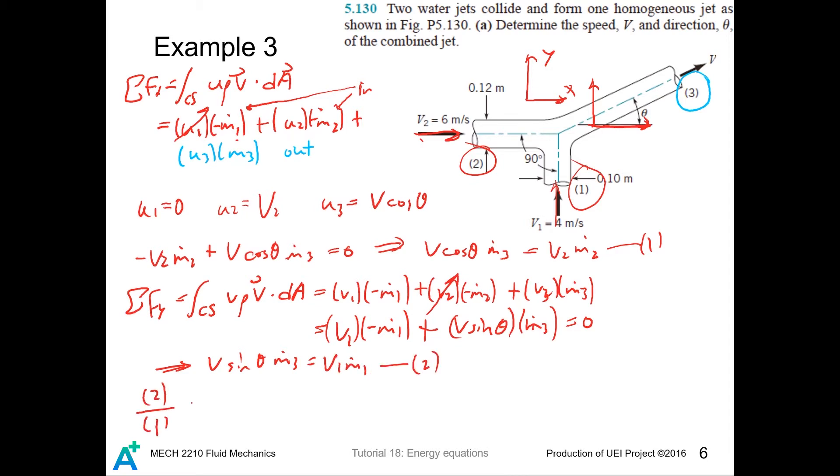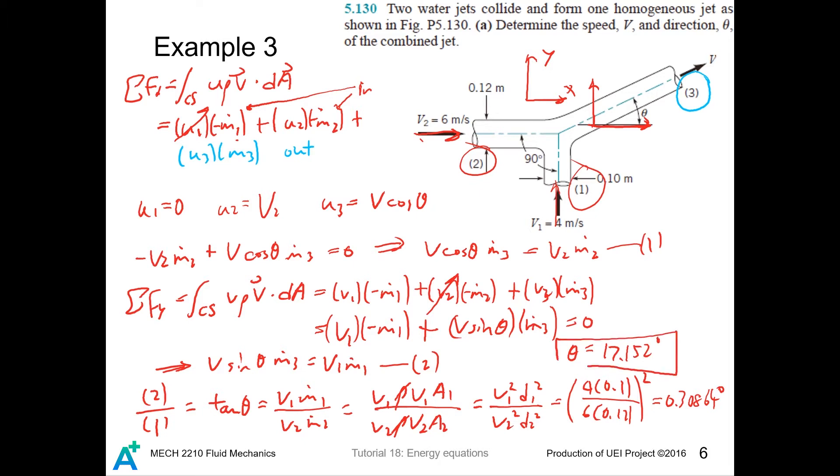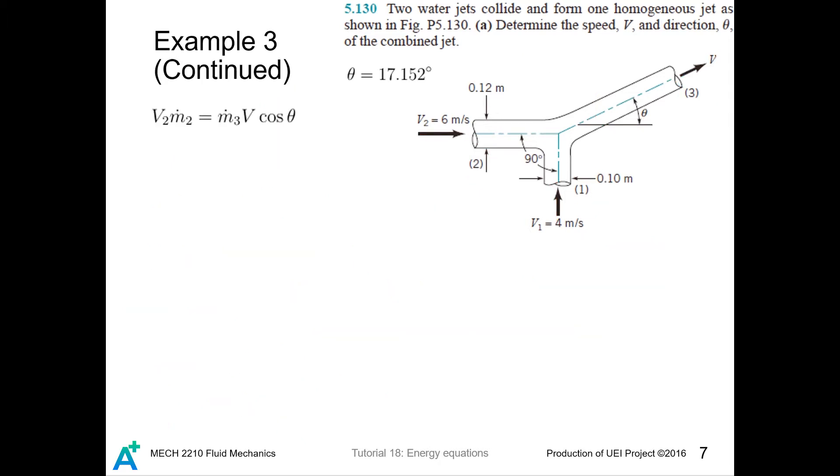And let's divide the second equation by the first equation so we get tangent theta equals... and we expand the mass flow rate. So theta is just... so we can obtain theta.